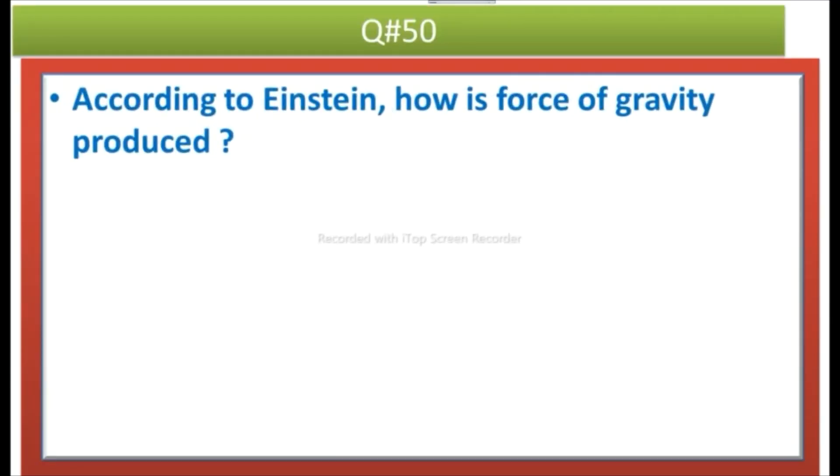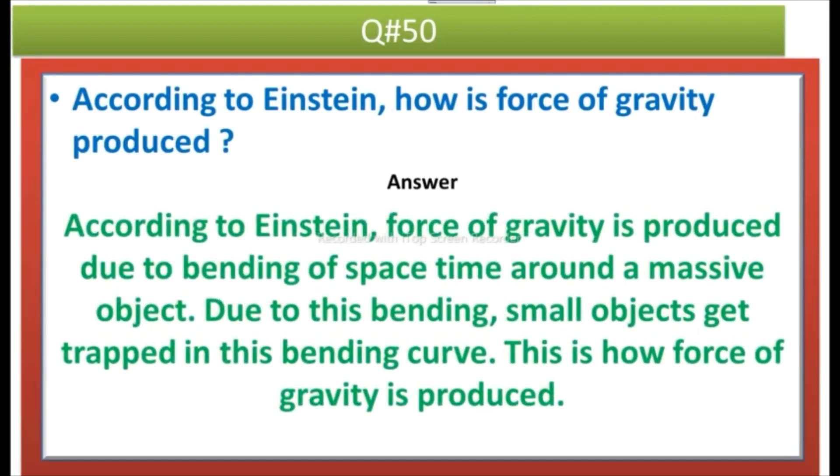The next question is according to Einstein, how is force of gravity produced? Answer: According to Einstein, force of gravity is produced due to bending of space-time around a massive object. Due to this bending, small objects get trapped in this bending curve. This is how force of gravity is produced.